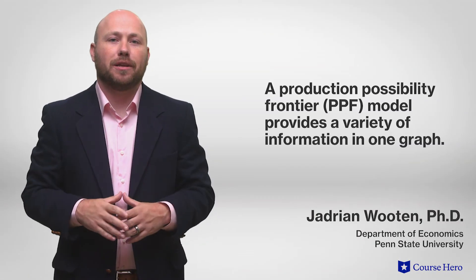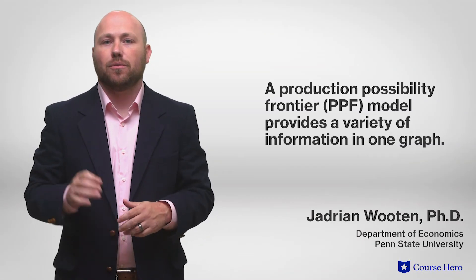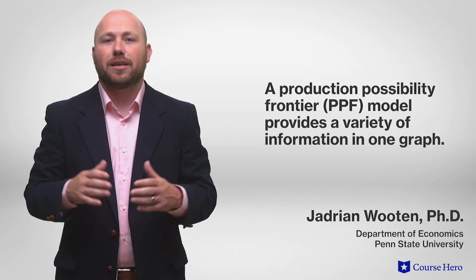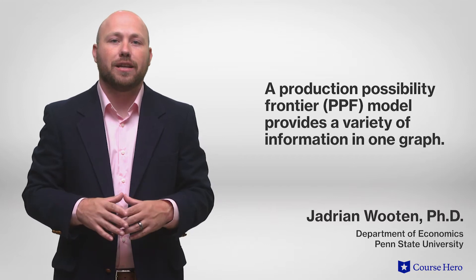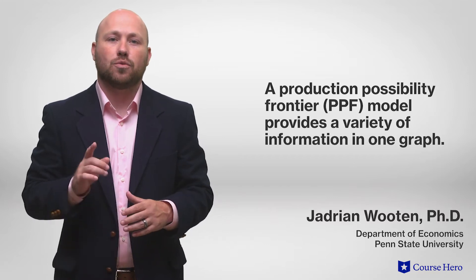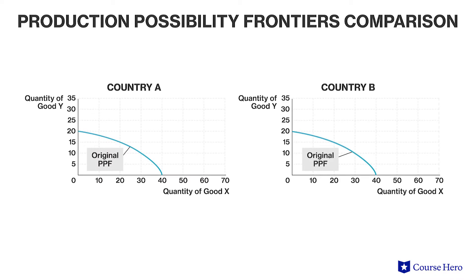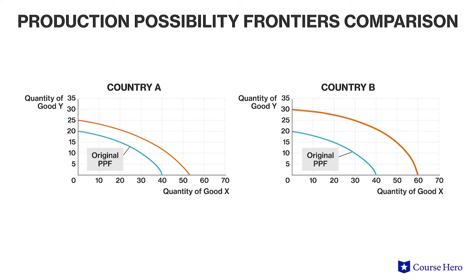A production possibility frontier model, which is also known as a PPF, can provide a variety of information in just one single graph. For example, the growth rate of two different countries can be shown over time by comparing how each country's PPF shifts over time.